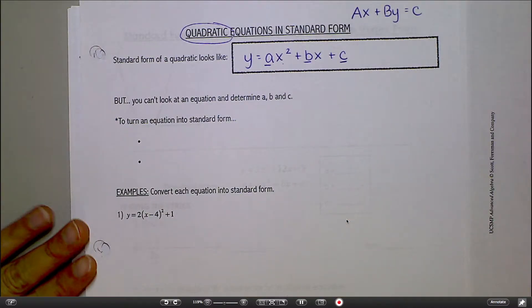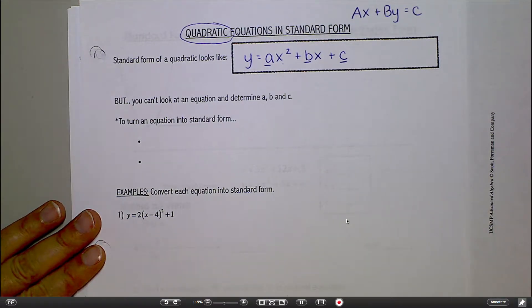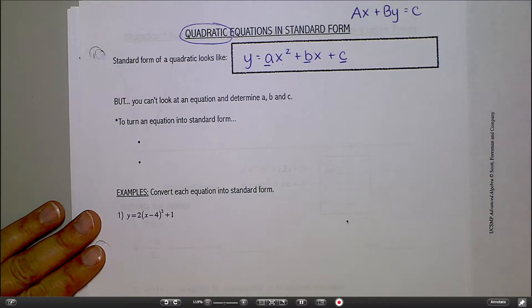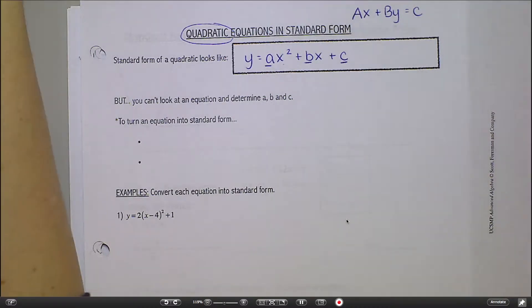But you can't just look at an equation and say, okay, here's what A is and here's what B is and here's what C is, if you want to try to convert it. There's no trick, there's no formula to doing this. You just work it out, you just do the math. And this is the part that people get confused on is because I hand them an equation and I say put it in standard form, and immediately people want to say, okay, well, how do I figure out what A is? How do I figure out what B is? There's not a way to figure it out other than to just simplify the problem and make it look like that.